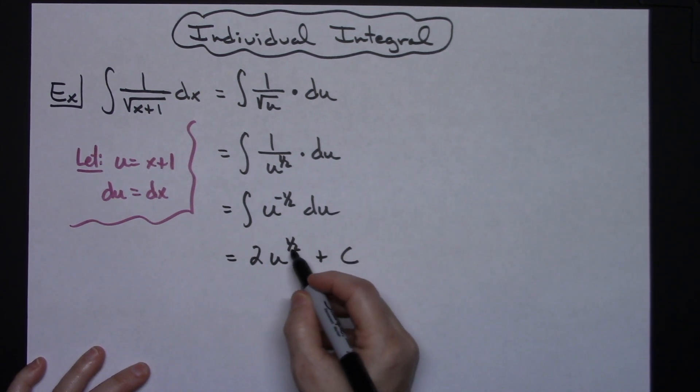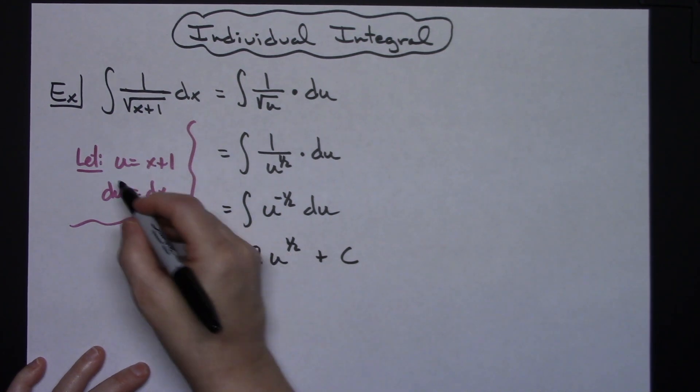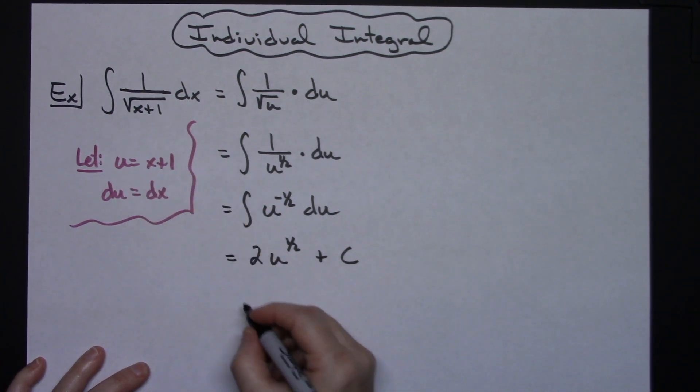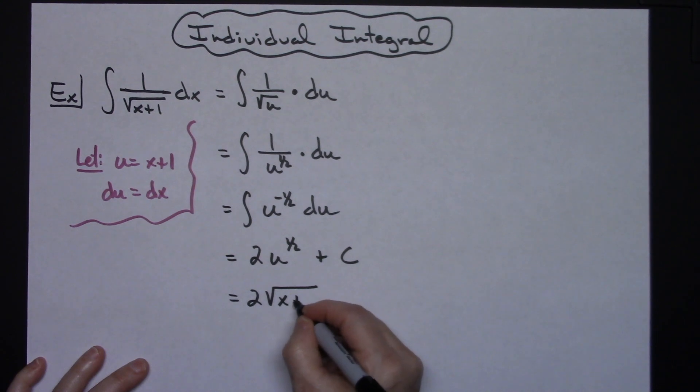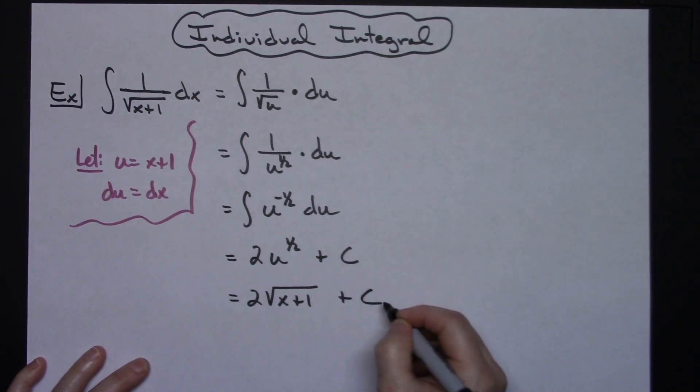Now I'm going to turn this 1 half back into a radical and substitute the u back for what I originally let it be. So then I will have 2 square root of, substituting that u, I'll have the x plus 1 and then plus c.